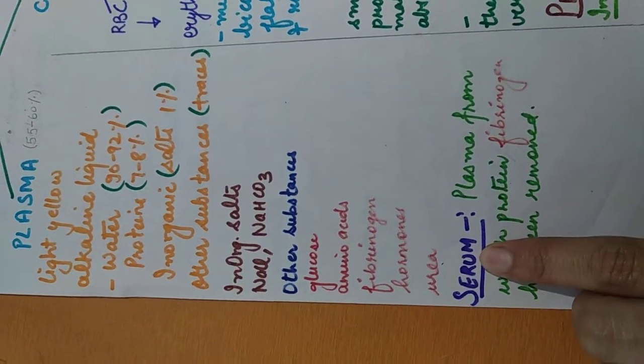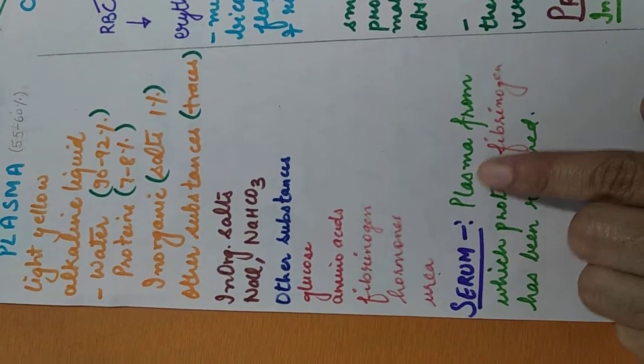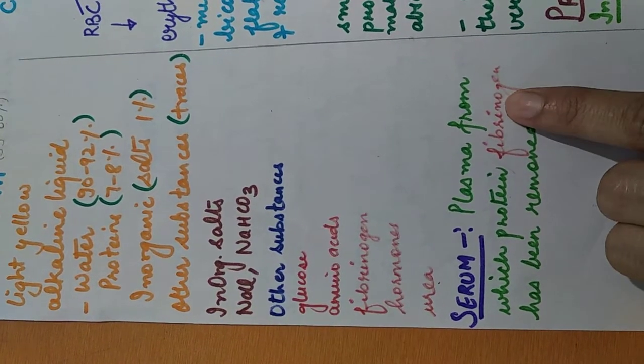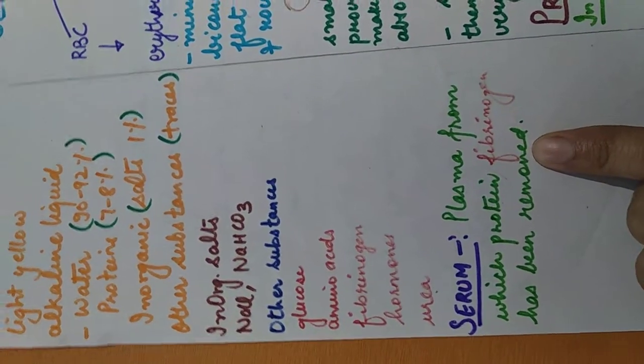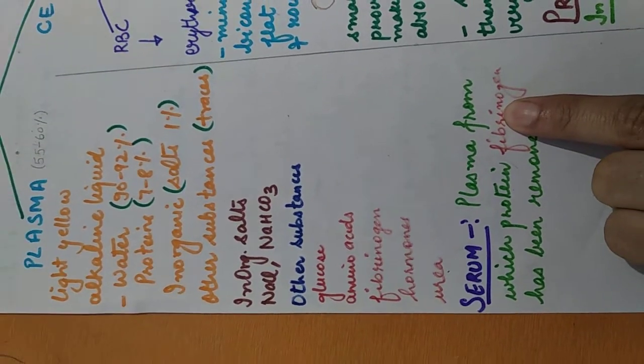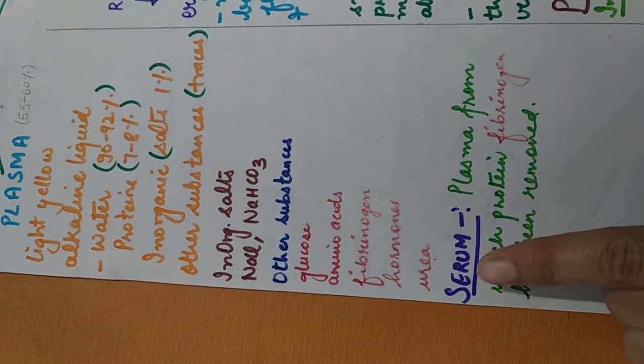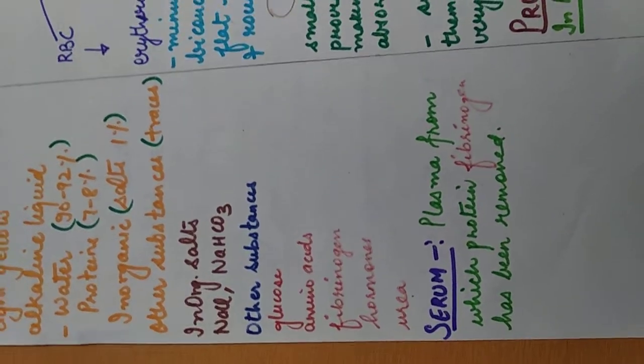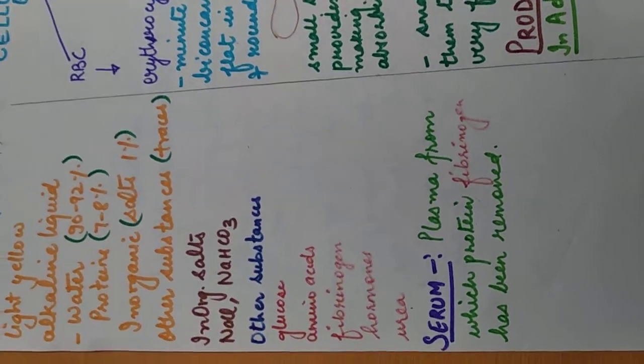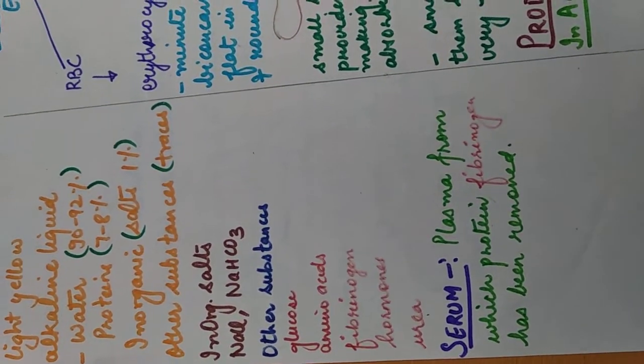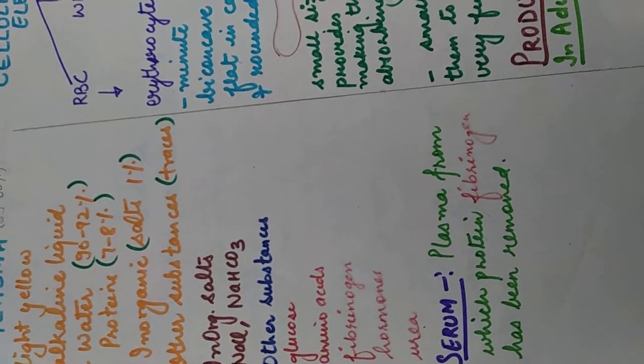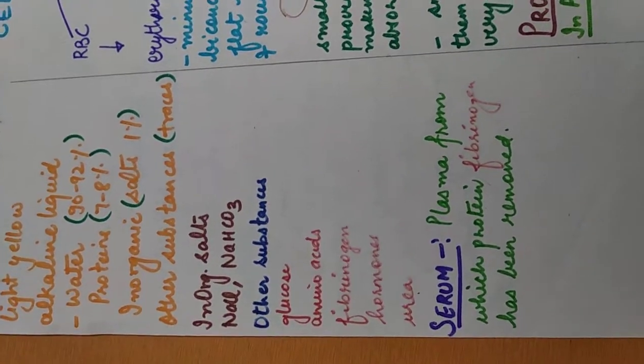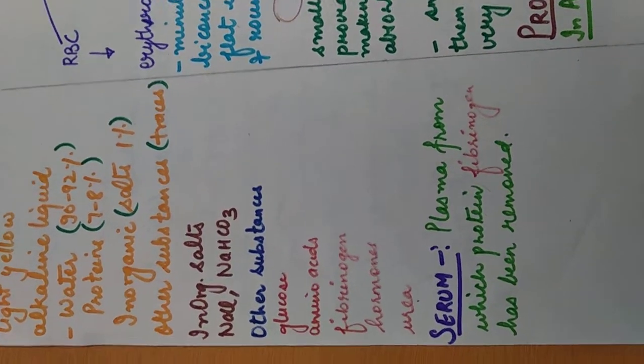So if you get a definition of serum, it is the plasma from which protein fibrinogen has been removed. You remember this term, fibrinogen protein is removed from the plasma, it forms serum. You can have this question as fill in the blanks or name the following, and the answer will be serum.